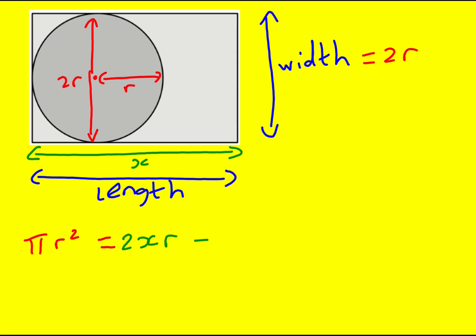minus the area of the circle itself, πr². So I've just created an equation. Area of the circle equals the lighter shaded gray area, which is the rectangle minus the circle.